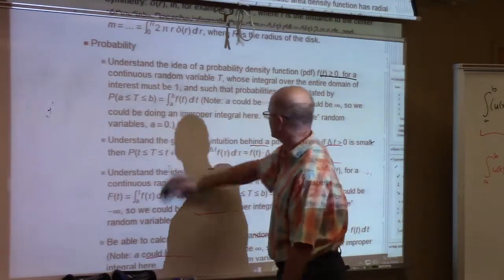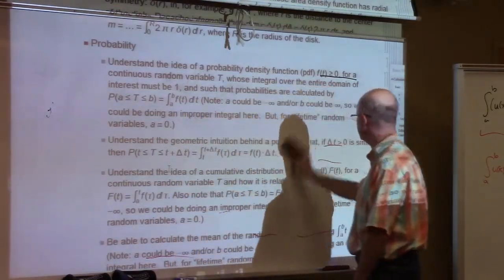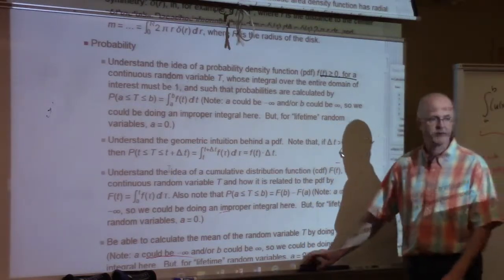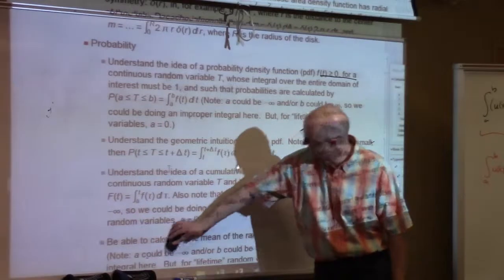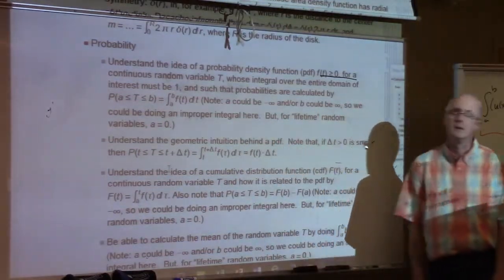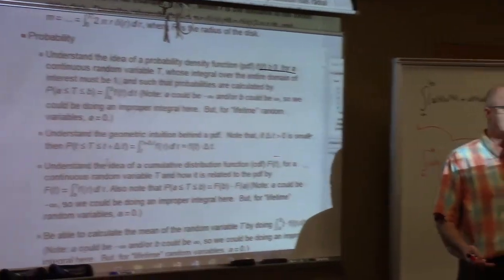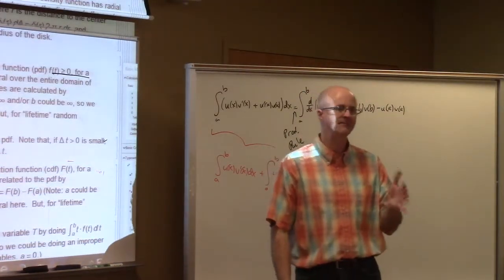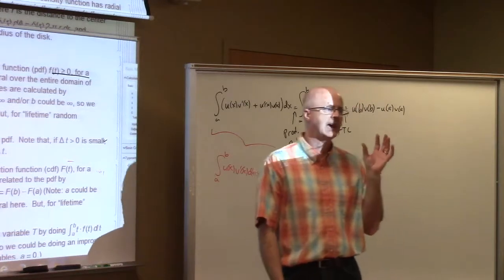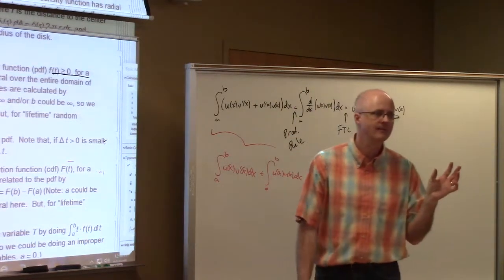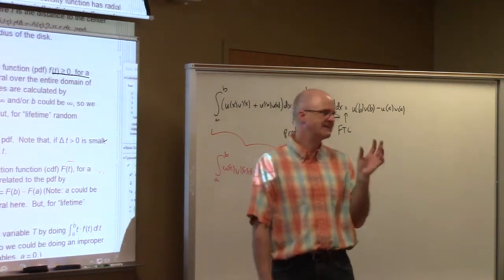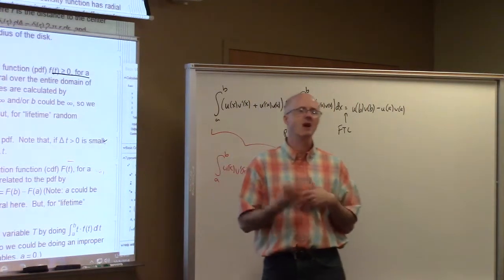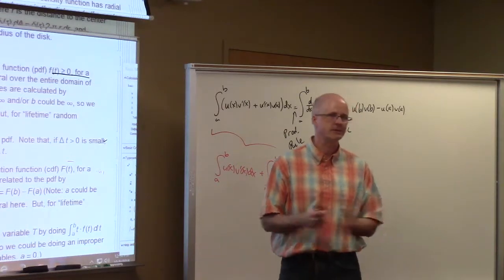You've got a continuous random variable. Call it capital T. It could be a wait time. It could be a lifetime of a person or an object. You'd like to find probabilities, chances of certain events, like how likely is it this baby will die between the ages of 70 and 80. That kind of chance is important in applications, for example, for insurance companies, to know what they should charge you for life insurance.